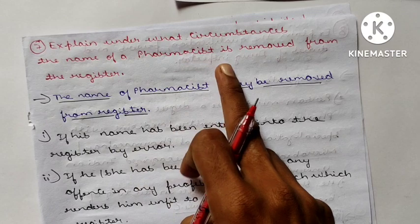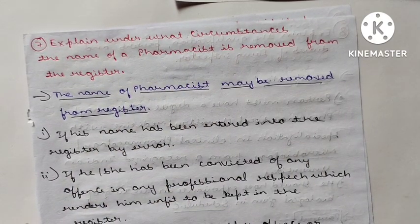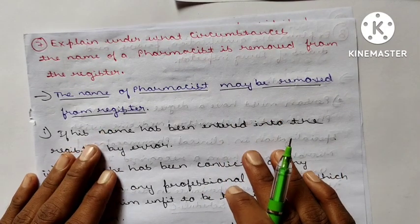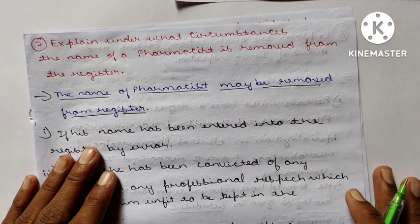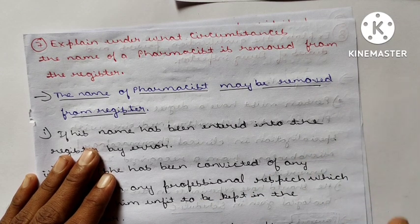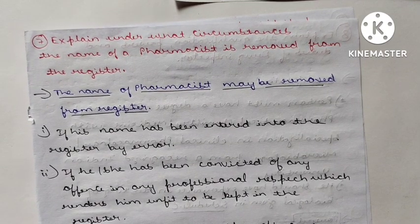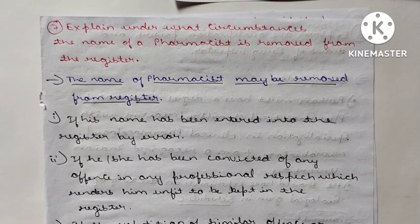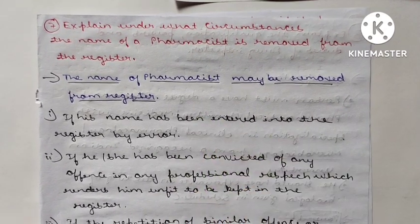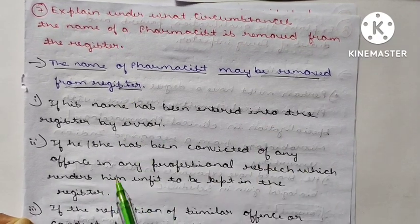Question 7: Explain under what circumstances the name of the pharmacist is removed from the register. This is about how a pharmacist's name gets removed or erased from the Pharmacy Council of India list — how his or her license gets rejected. The name of the pharmacist may be removed from the register if his name has been entered into the register by error.